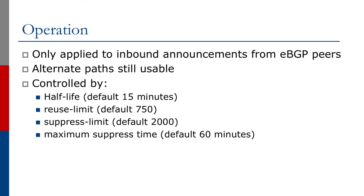Route flap damping only applies to inbound announcements from eBGP peers, and it only applies to the path that was flapping, meaning alternative paths were still usable. By vendor implementation, the half-life time, the reuse limit, the suppress limit, and the maximum suppress time could all be controlled at the command line interface.